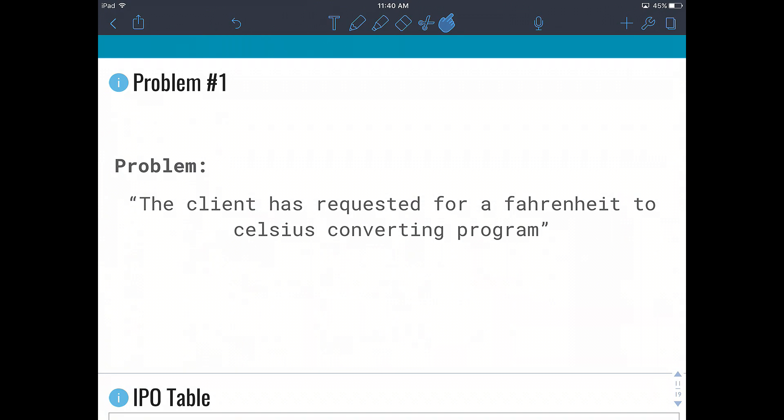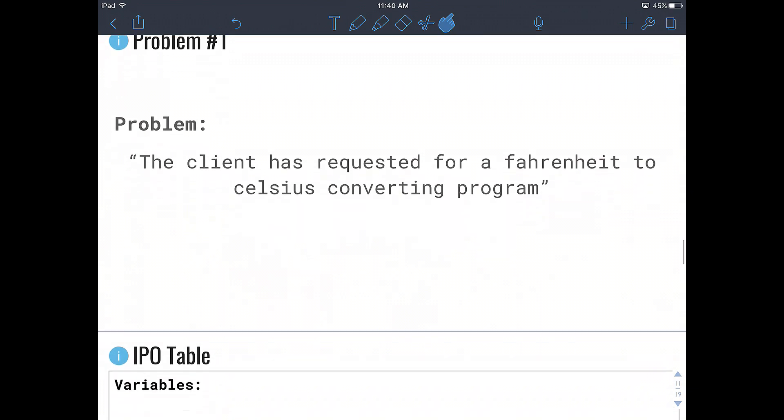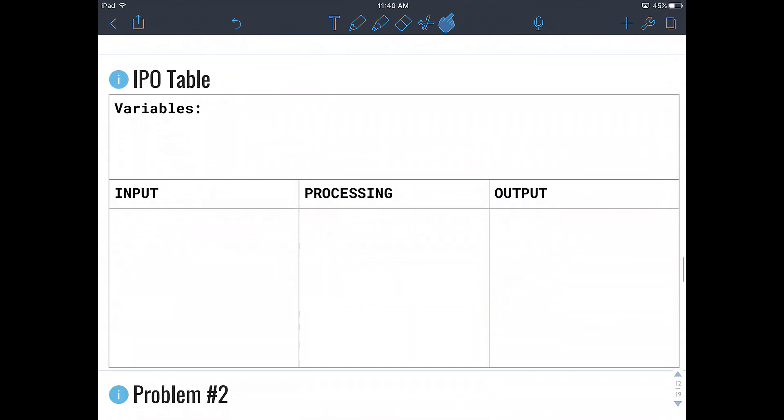So problem number one states that the client has requested for a Fahrenheit to Celsius converting program. And one of the best ways to design an IPO model is to use an IPO table where you talk about the variables at the top, and we talk about the three stages, the input, processing, and output.